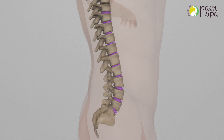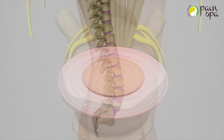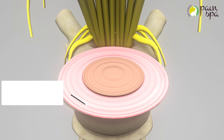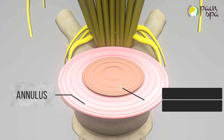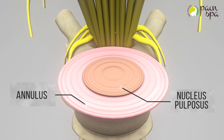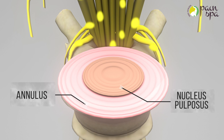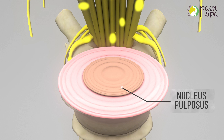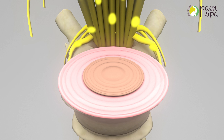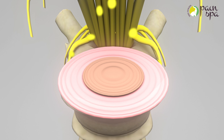Lumbar disc prolapse or herniation can be an important cause of low back pain. The disc has a strong outer ring called the annulus and soft jelly-like material in the center called the nucleus pulposus. The spinal cord and the nerve roots are sensitive structures lying just behind the disc and carry messages throughout the spinal column.